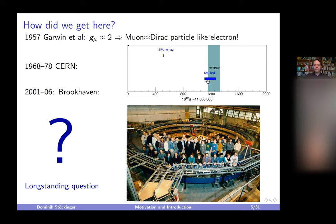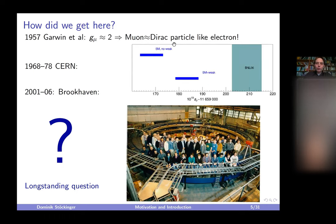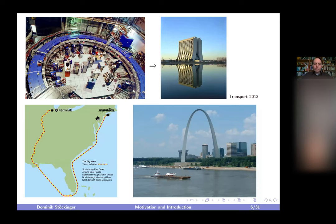Two theory predictions were derived — without and with weak interactions — but both disagreed with the Brookhaven measurement. Neither the full Standard Model prediction agreed with the Brookhaven result. At publication, this was a ~3 sigma deviation; currently it's a little more than 3 sigma, and together with Fermilab we now have a 4 sigma deviation. Because of this, the community was motivated to improve the measurement, and the Brookhaven ring was transported to Fermilab.